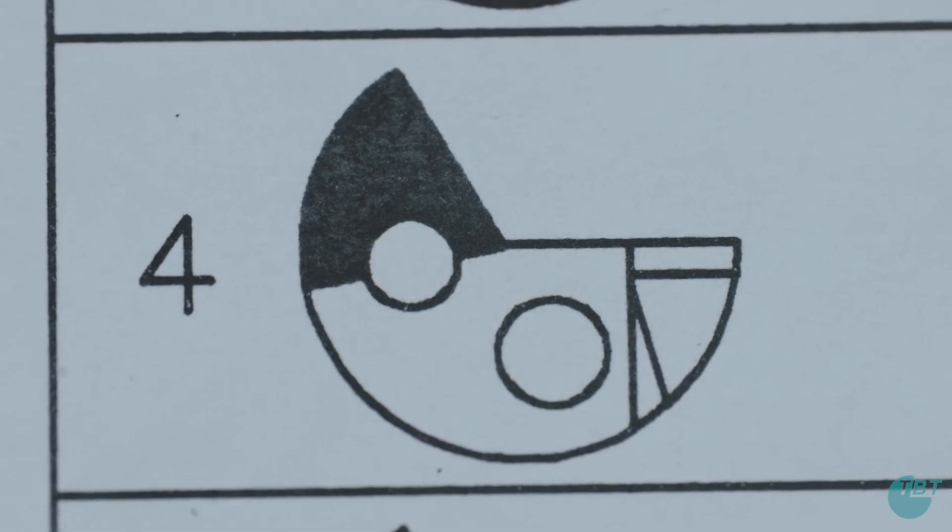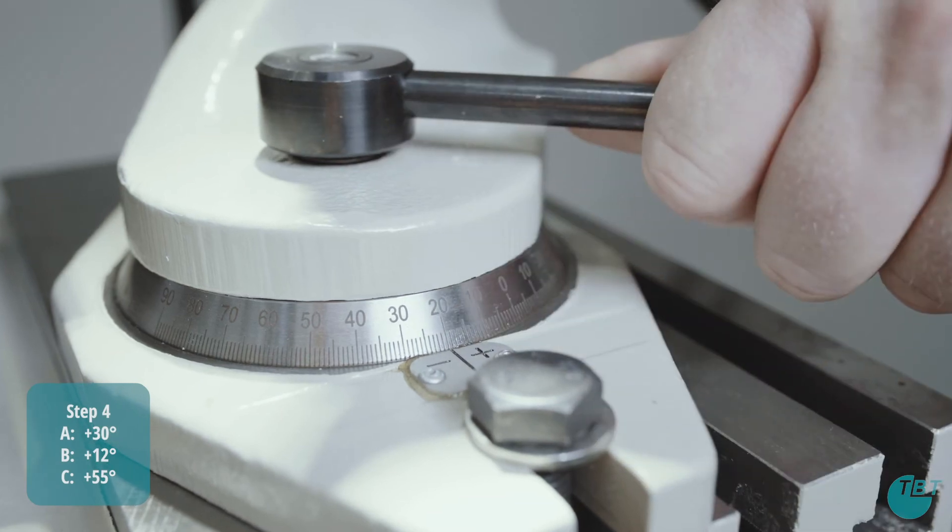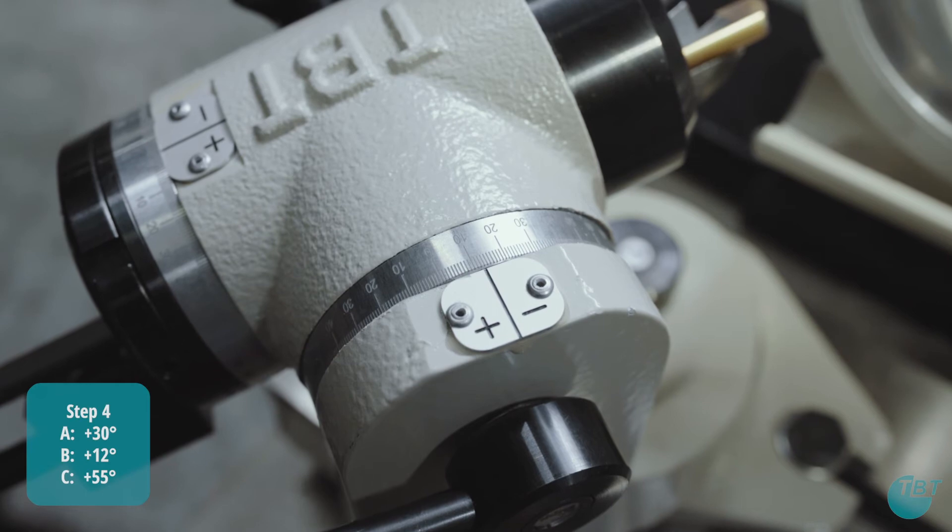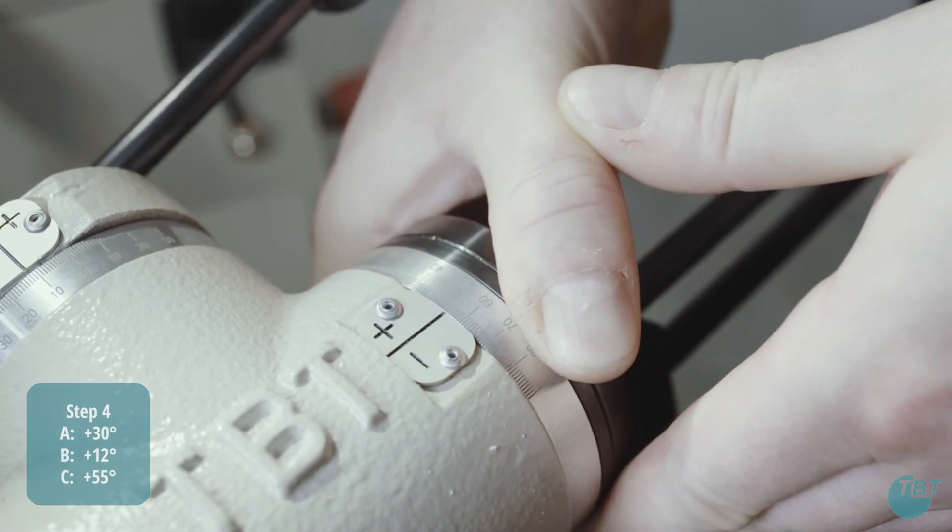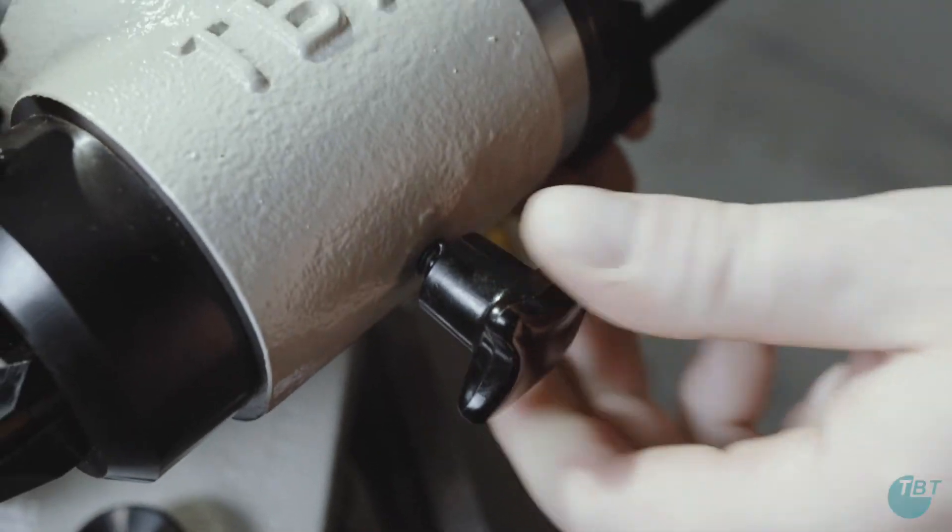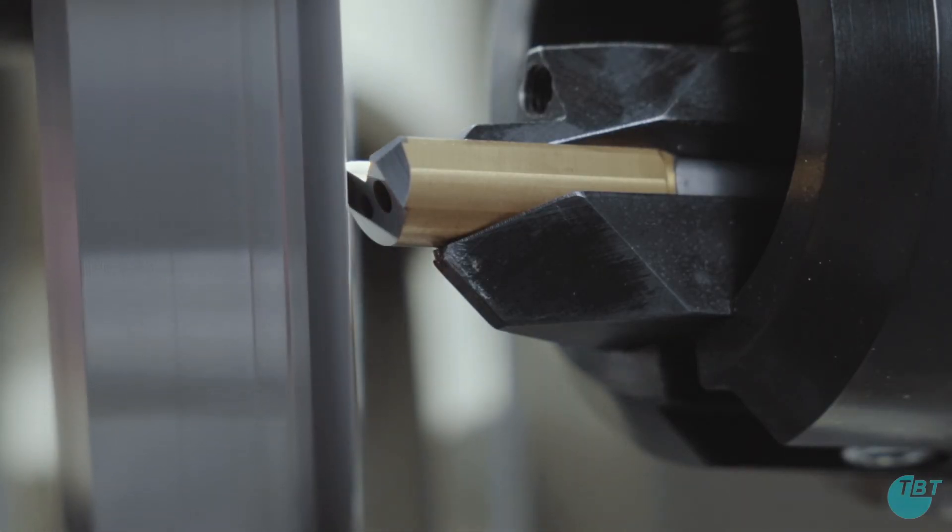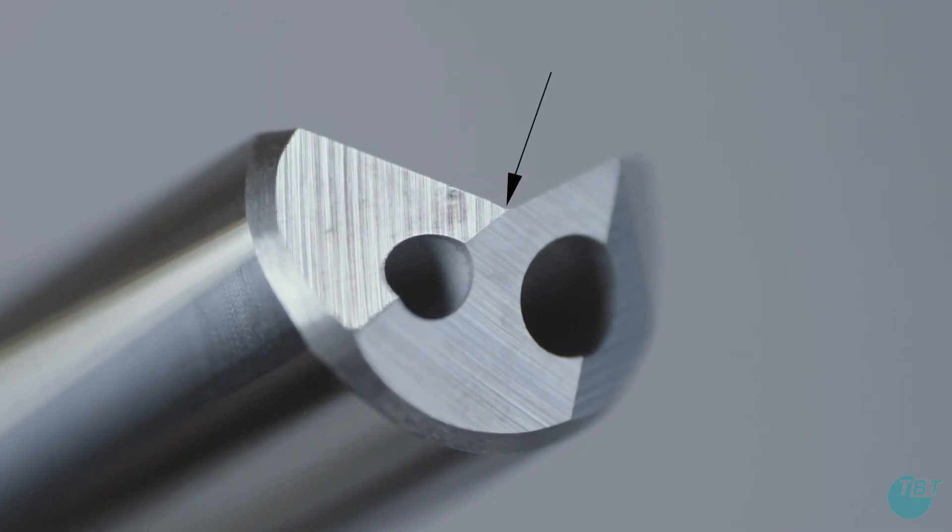Next set the axis values for grinding the oil clearance. Set the A axis to plus 30 degrees, leave the B axis at plus 12 degrees and set the C axis to plus 55 degrees. Grind the oil clearance until the edge of the surface reaches exactly the center of the tool.